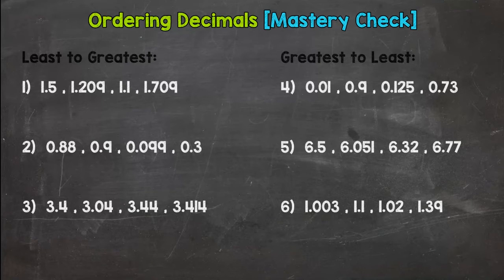So if you're ready to rock with the mastery check, I'm going to tell you to pause here in a second. But you should have a piece of paper and something to write with, or a mini whiteboard and a marker, or whatever, to write these six lists in order from either least to greatest or greatest to least.